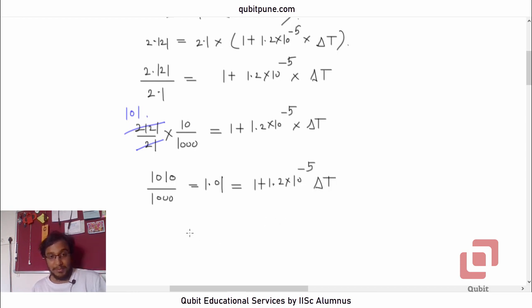So what will be delta t? Bring 1 here. So that will become 0.01. So 0.01 upon 1.2 into 10 raised to negative 5. This is 10 raised to negative 2. So when this goes to the numerator, it will become 1,000, or 10,000 upon 12, or 2,500 upon 3.